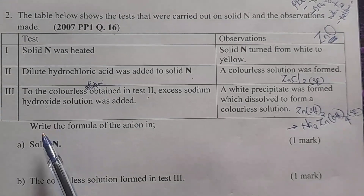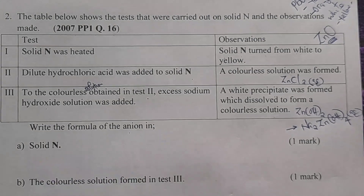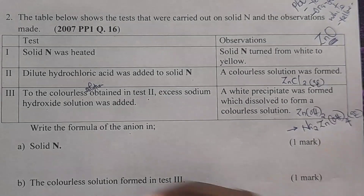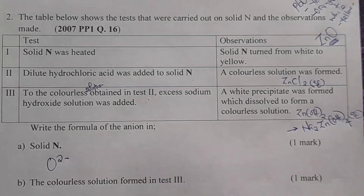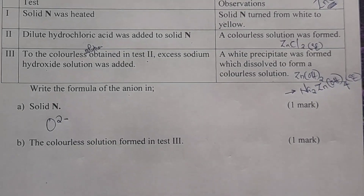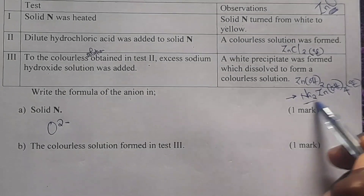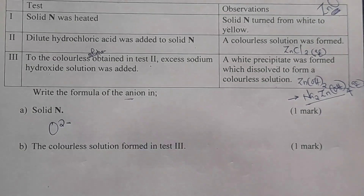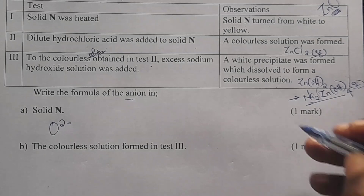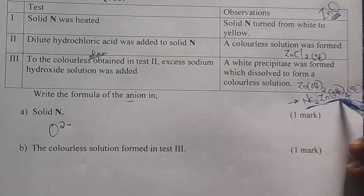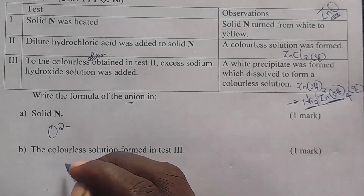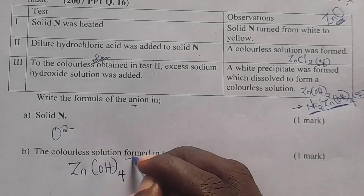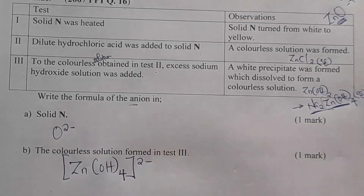Now let's look at the questions we are asked. We are told: write the formula of the anion in solid N. Solid N is zinc oxide, so the anion is the oxide ion, O²⁻. Next, for the colorless solution formed in test 3 — that compound is sodium zincate — the anion will be the zincate ion, written as [Zn(OH)₄]²⁻, because sodium is the cation and zincate ion is the anion.